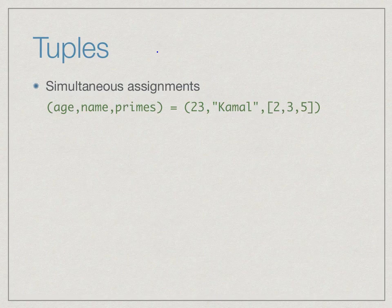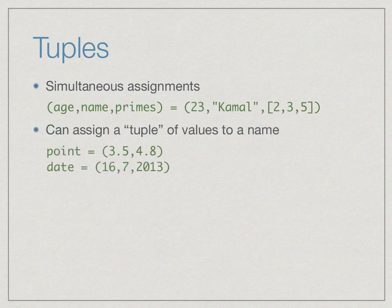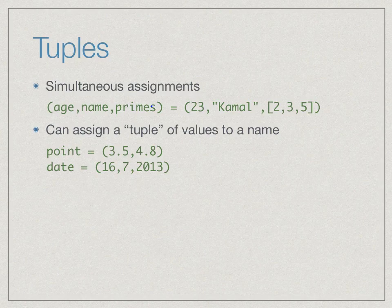We have seen simultaneous assignment where we take three names on the left and assign them to three values on the right, enclosed in round brackets. This sequence of values with a round bracket is called a tuple. Normally we talk about pairs, triples, quadruples, but in general for k values we call them k-tuples. In Python, tuples are valid values — you can take a single name and assign it a tuple of values, for instance a two-dimensional point with x coordinate 3.5 and y coordinate 4.8.